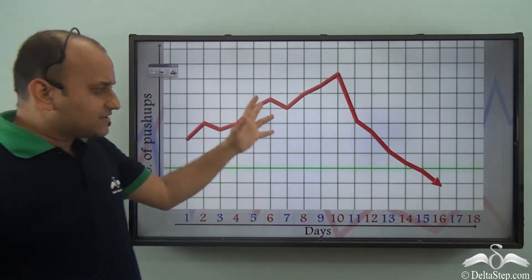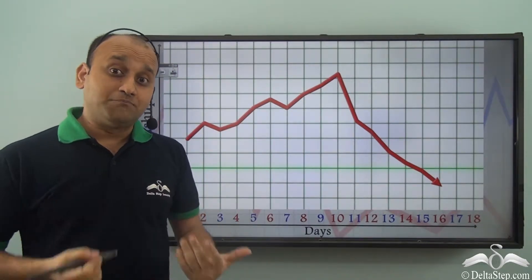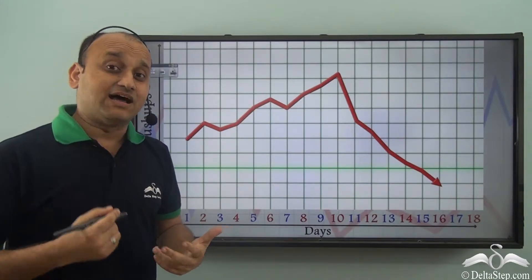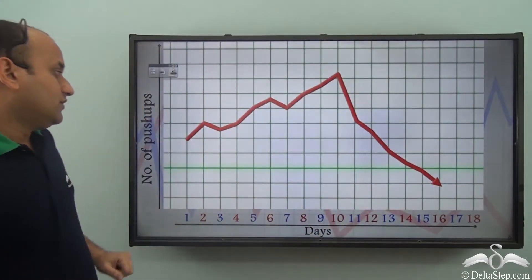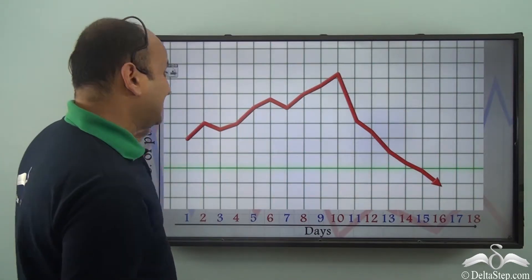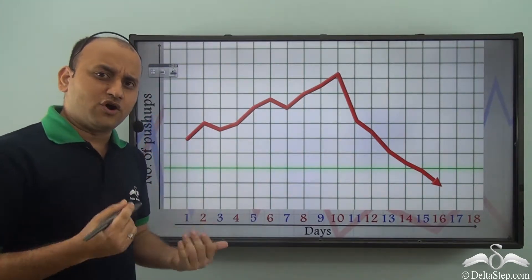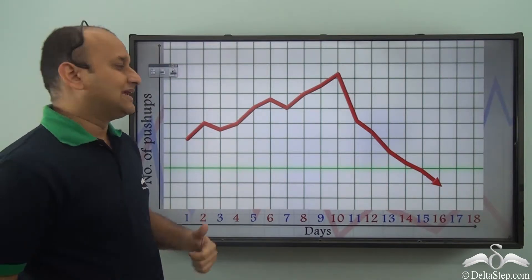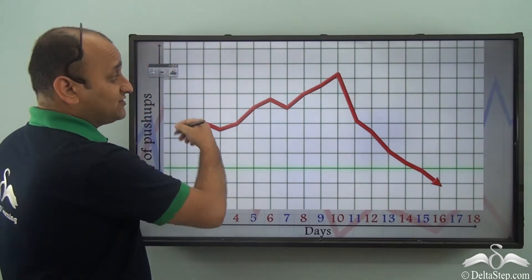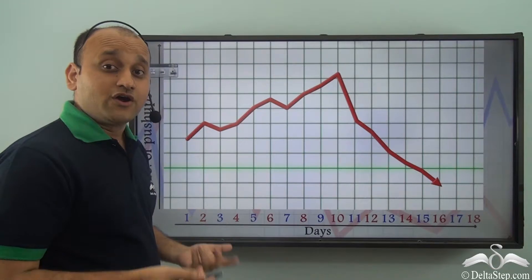Now we have another line graph. This shows John's performance — John has started doing push-ups recently, and this graph shows the number of push-ups done by John over 16 days. The actual number of push-ups per day is not given, but you have the line graph. So can you say whether he has improved or not? You can definitely say using a line graph — even without actual numbers, the trend tells you.